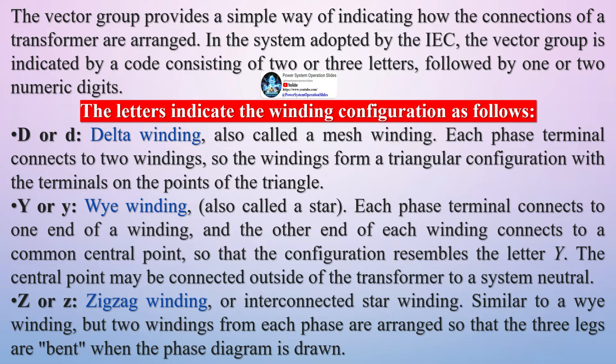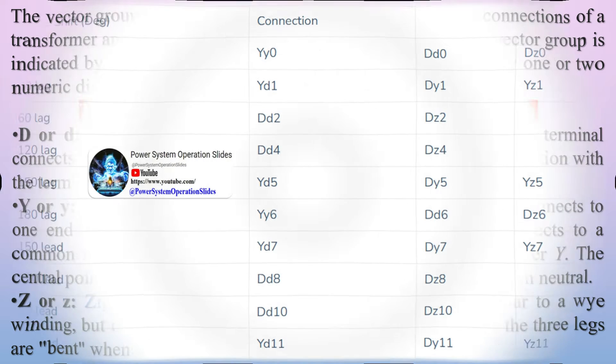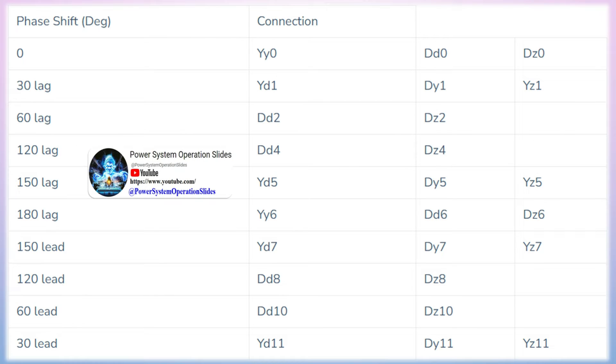The notation should follow HV-LV phase displacement sequence with the HV winding in uppercase and LV winding in lowercase. For example, a winding configuration where the HV winding is connected in delta while the LV winding is connected in star, and the LV lags the HV by 30 degrees, belongs to the vector group of transformer dyn11.